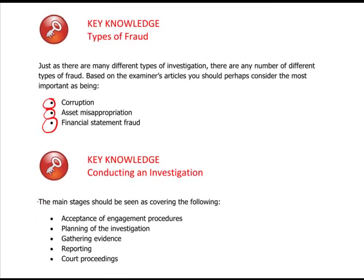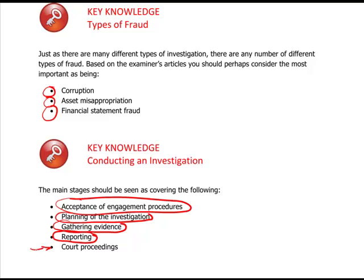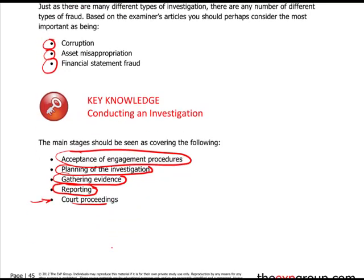Conducting an investigation: the main stages cover first accepting the engagement and agreeing terms and conditions, as you would with a statutory audit; planning the investigation; gathering evidence; and reporting your findings — which is somewhat different from a statutory audit, likely a longer document with many appendices. Ultimately you may end up going to court, which again is different from a standard audit. But that's forensic accounting — it comes up very often and is certainly something new compared to F8. That's the end of this chapter. Thank you.